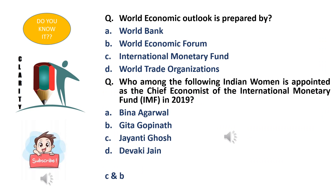World Economic Outlook is prepared by: option A - World Bank, option B - World Economic Forum, option C - International Monetary Fund, option D - World Trade Organization. Friends, the World Economic Outlook is a report prepared by the International Monetary Fund. It analyzes the economic development and policies of its member countries, and also projects developments in global financial markets and economic systems.